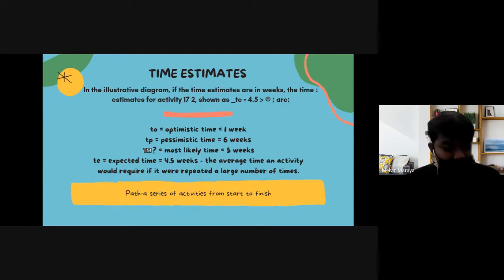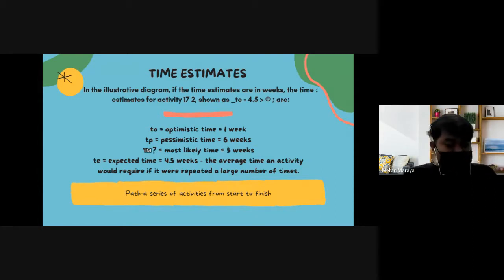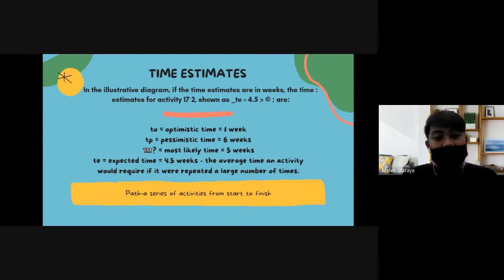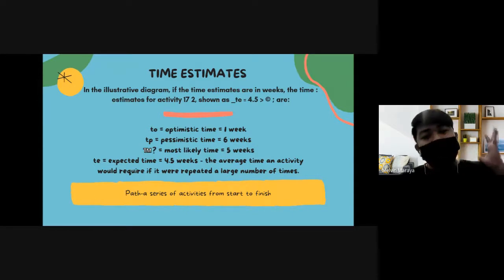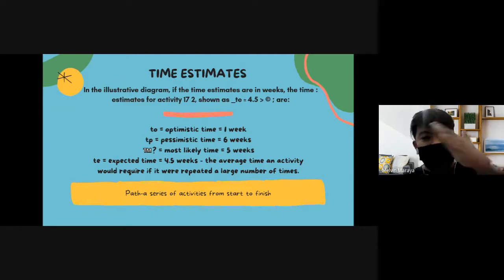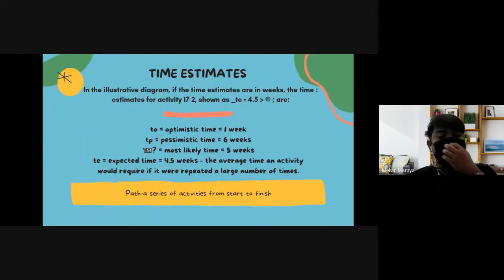Most likely time is the highest probable time. If optimistic is the shortest time, and pessimistic is the longest time, then most likely time is the time you are most certain about — for example, if you know it won't finish in one week but won't take six weeks either, then it will most likely finish at around five weeks. That is the most likely time.